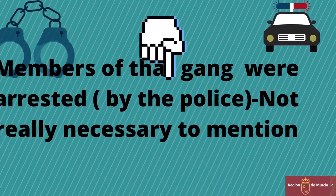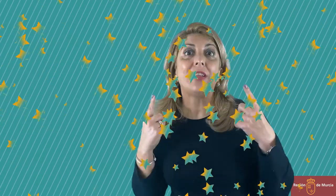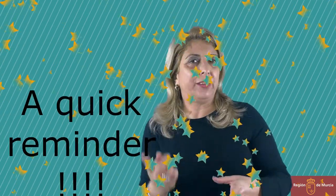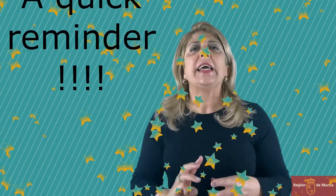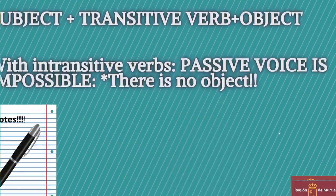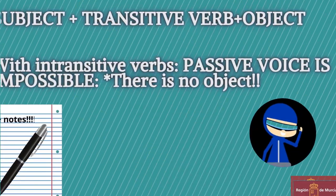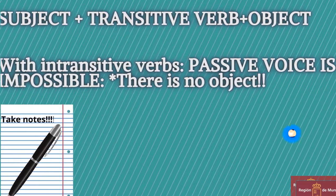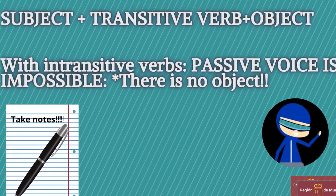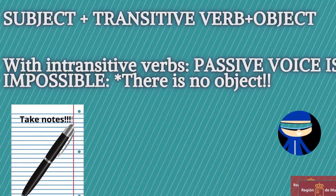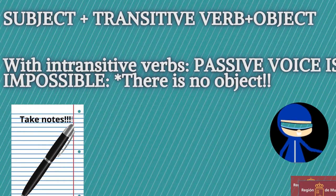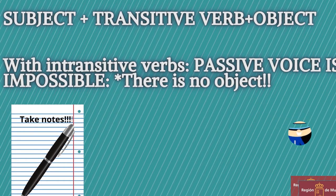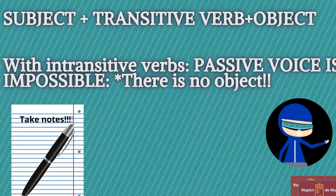Members of that gang were arrested. But before analyzing the transformation of the passive voice — that would be our third point — let me give a quick reminder. To transform an active sentence into a passive one, you need a transitive verb. I mean, you need an object. Because if the action is described by an intransitive verb, it's impossible to have a sentence in passive voice.